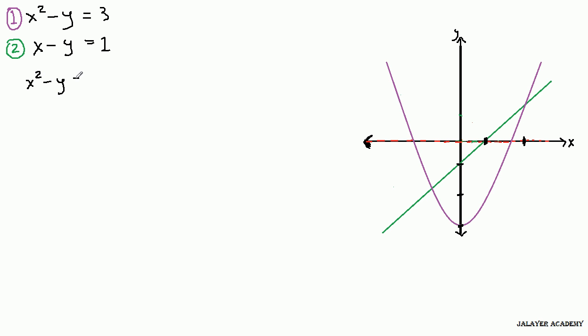x squared minus y equals 3. Well, I want to get y alone. So let's get x squared to the right. And we're left with negative y equals 3 minus x squared. Now I don't want negative y here. I want it to be positive. So I just flip that sign. Then it means I have to flip every other sign in the equation. So 3 becomes negative 3. Minus x squared becomes plus x squared. And we're left with y equals negative 3 plus x squared.